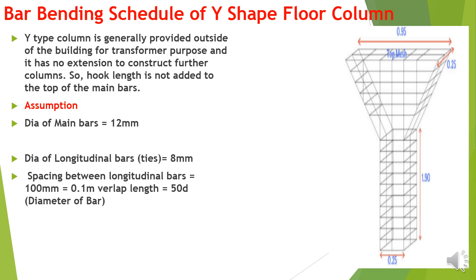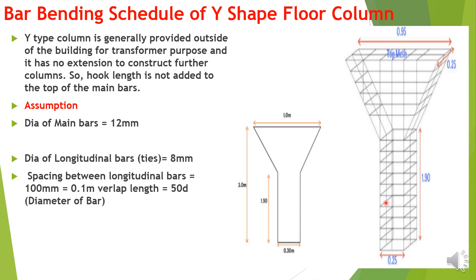Here you can see the column outer diameter is 1 meter whereas the reinforcement ring is 950 mm, that is after deducting 25 mm on both sides of the column. The column height is 3 meters. This vertical height is 1.9 meters — this is given. The column width is 300 mm whereas the actual width is 250 mm after deducting the cover.